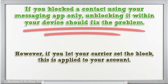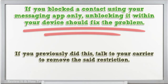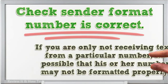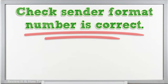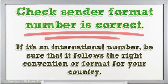However, if you let your carrier set the block, this is applied to your account. This means that whatever phone you use, your account won't be able to receive any message from that particular number. If you previously did this, talk to your carrier to remove the said restriction. Check sender format — number is correct. If you are only not receiving texts from a particular number, it's possible that the number may not be formatted properly. Try to delete, then re-add the number in your contacts app. If it's an international number, be sure that it follows the right convention or format for your country.